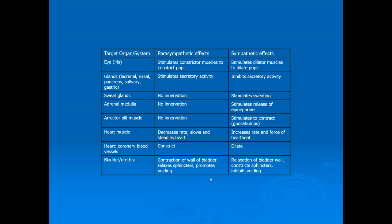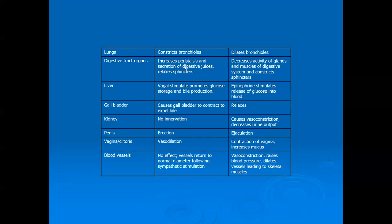Parasympathetic innervation also constricts blood vessels in the heart so less blood flows to the cardiac muscle. For urination, the sacral nerves at the bottom of the spinal cord — not the vagus nerve — control our ability to urinate during the day. In the lungs, parasympathetic activity constricts the bronchioles — we don't need as much airflow when we're at rest. The vagus nerve tells the liver to store glucose, since the sympathetic is responsible for releasing it. The gallbladder is signaled to contract and expel bile to aid digestion.